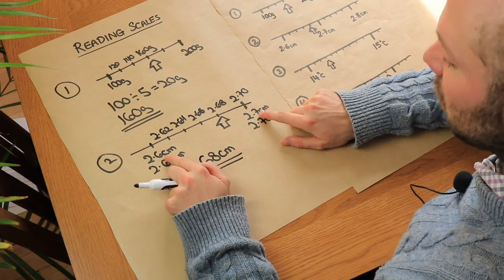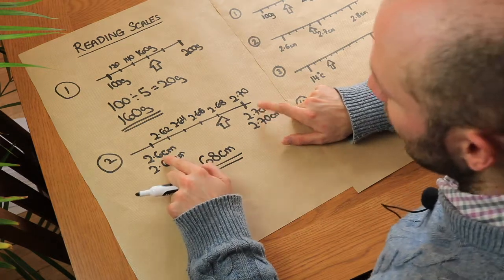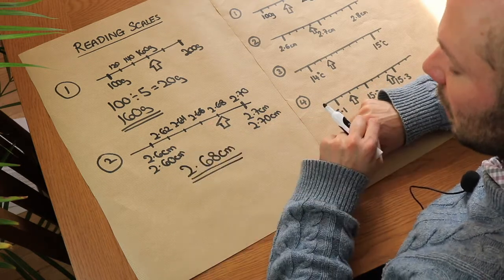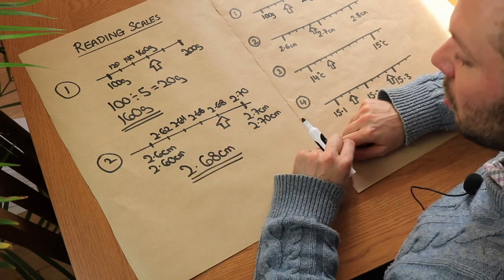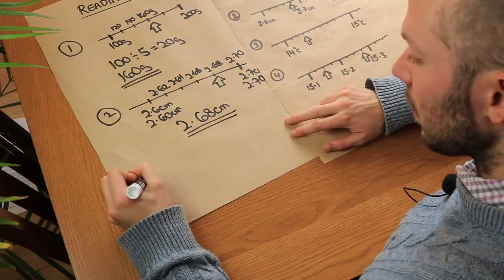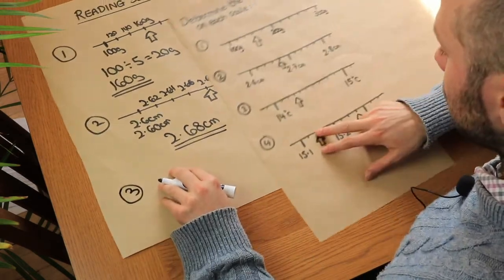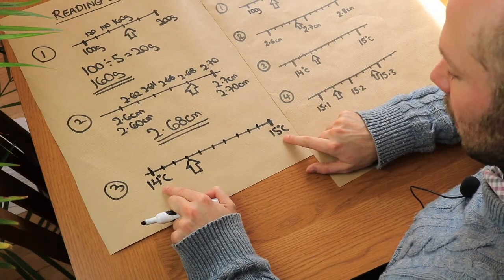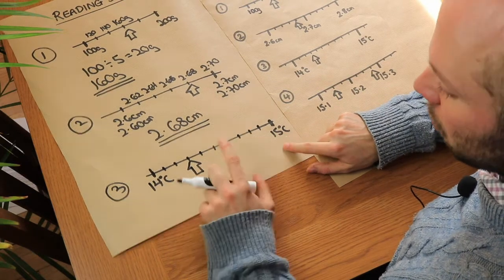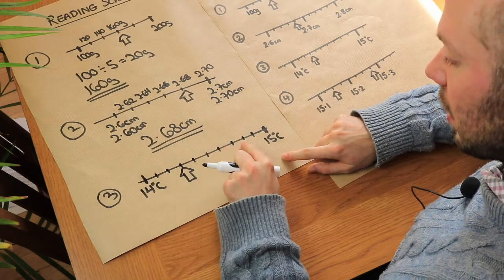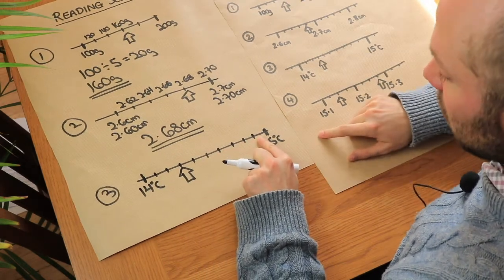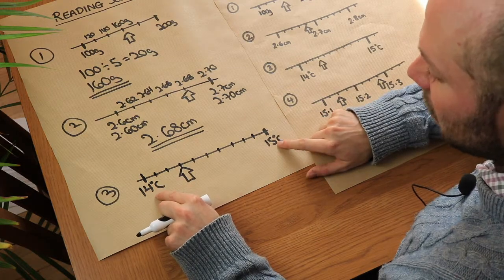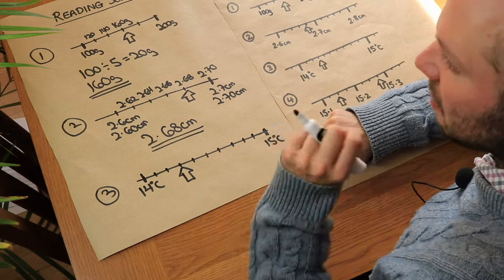So when we have digits after decimal point it can sometimes be helpful to put zeros on the end because then 60 to 70 we can easily divide up into five knowing it goes up by two each time. What about the third one? This is actually a bit easier this one. Now again we look at the difference between these, we've got 14 and 15, that's a difference of one and how many regions do we have? One, two, three, four, five, six, seven, eight, nine, ten. So we've got to split that up into 10. If we're splitting a whole up in 10 then 1 divided by 10 is a tenth.